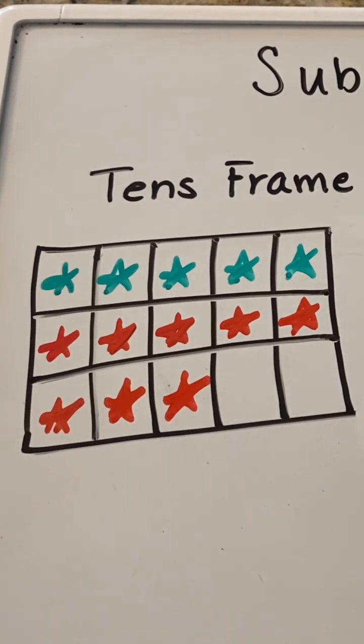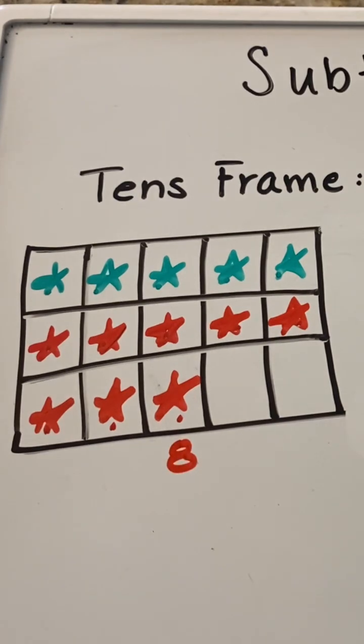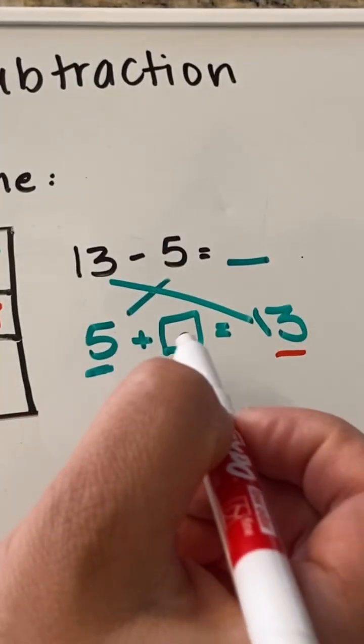We're going to count all the stars that are in red. We have 8 red stars. So what goes in our blank? 8.